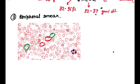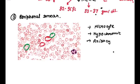So what are our peripheral smear findings? We will see microcytes, hypochromic cells, anisocytes, and poikilocytes.